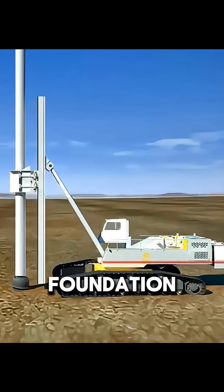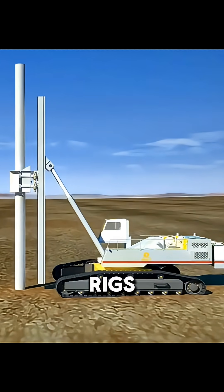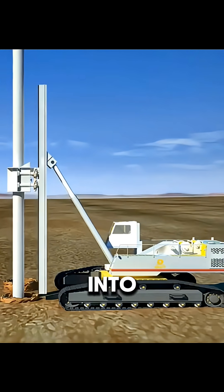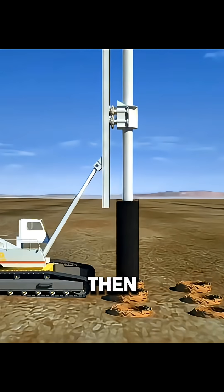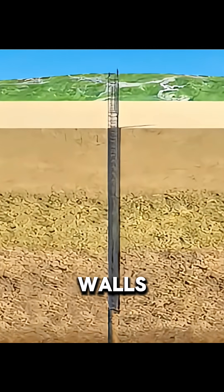It all starts with the foundation. Massive rotary drilling rigs bore deep pile holes into the ground with millimeter-level precision. Steel casings are then inserted to stabilize the walls and prevent collapse.